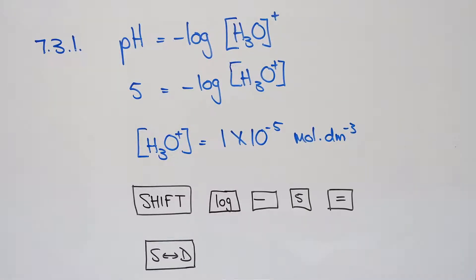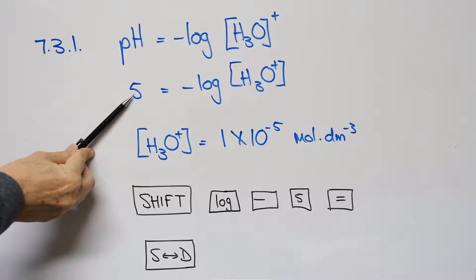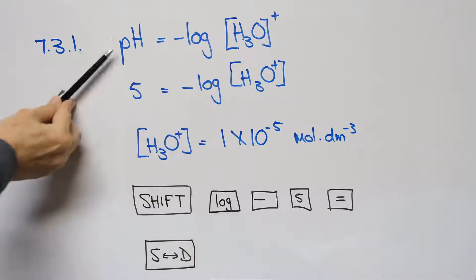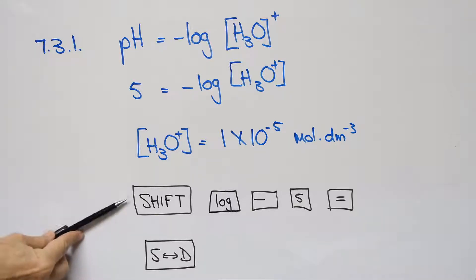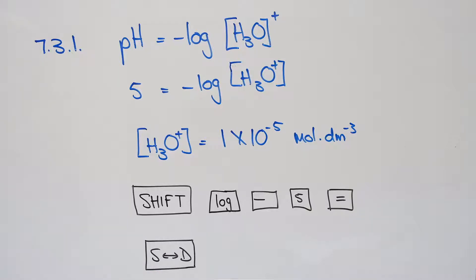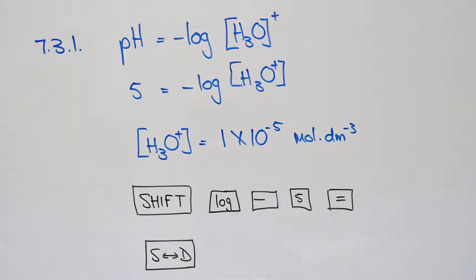Question 7.3. The water in a certain lake has a pH of 5. 7.3.1: Calculate the concentration of the hydronium ions in the water. They gave you the pH and want the concentration of hydronium ions. Always give the equation from the data sheet first, then do your substitution. On the calculator, press shift, log, negative 5, equals. You must always give a decimal answer or scientific notation — press the SD button to convert from the fraction. The answer is 1 × 10⁻⁵ mol·dm⁻³.